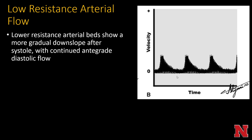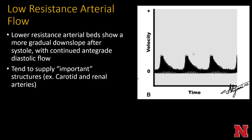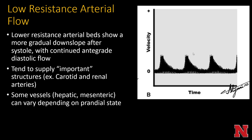Low resistance arterial flow supplies beds that are more critical for immediate life, such as blood to the brain or kidneys. It shows a more gradual downslope — looking more like a hill than a sharp peak — with continued antegrade flow throughout all of diastole, so there's no dip below the baseline. This is typical of carotid and renal arteries. Some vessels like the mesenteric vasculature or hepatic artery can vary between low and high resistance depending on when you last ate, whereas the carotids should essentially always show low resistance arterial flow unless in a pathologic state.